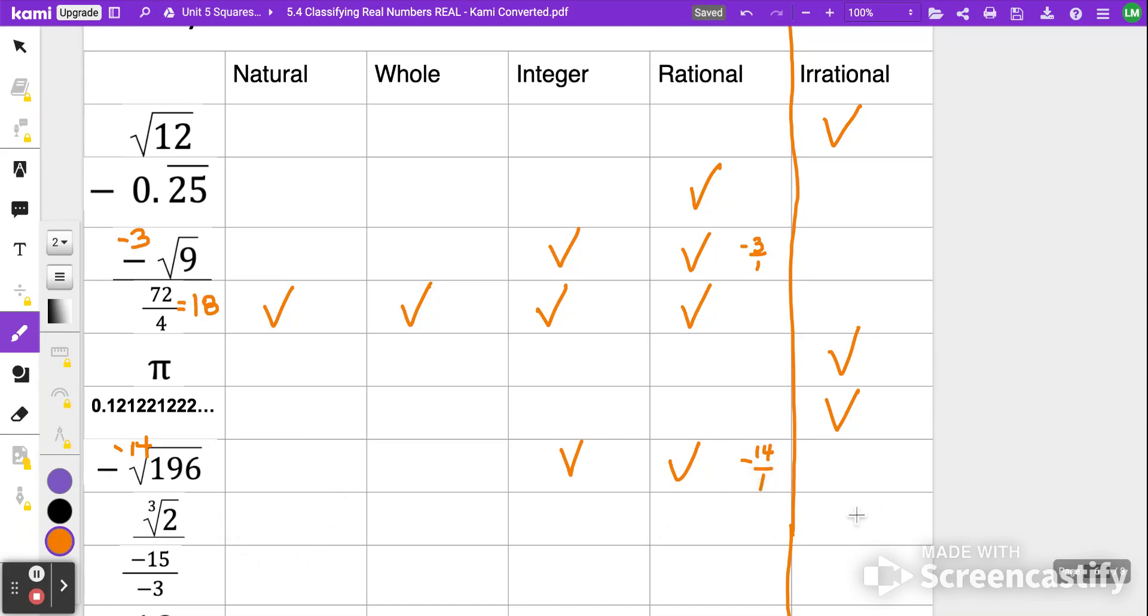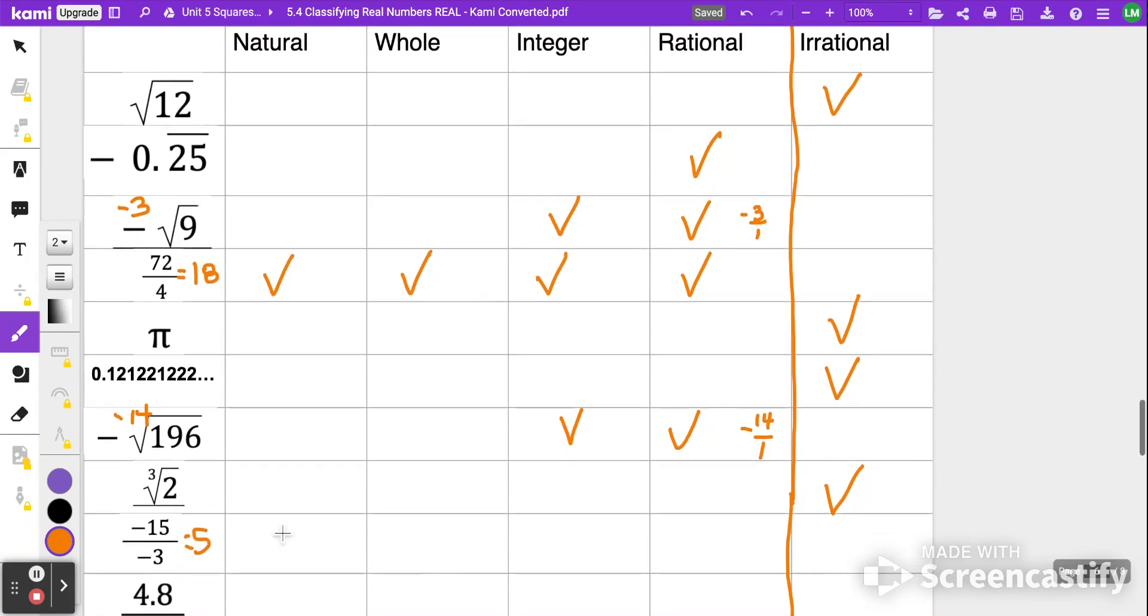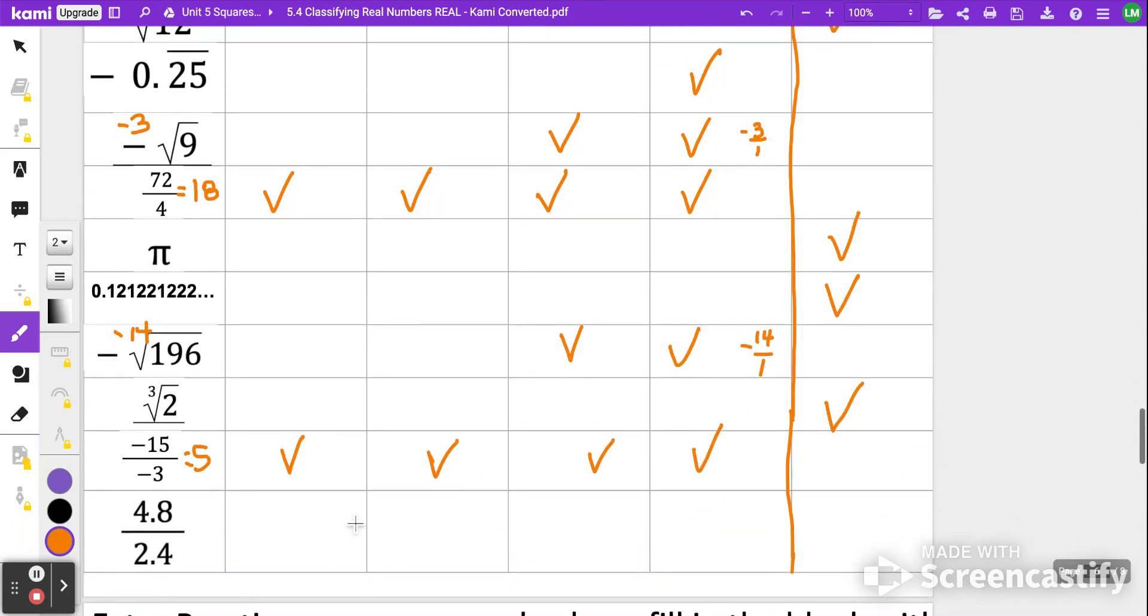The cube root of 2 is not a perfect cube. It's going to give us a decimal that doesn't repeat, doesn't end, so that's considered irrational. Negative 15 over negative 3 is actually equal to a positive 5, so that is considered natural number, whole number, integer, and rational. And then the last one is just a decimal, 4.8 over 2.4. So if you just take those and divide them, you're going to get the whole number 2. So that is a natural, whole, integer, and rational number.